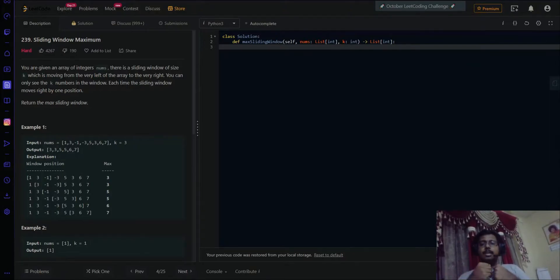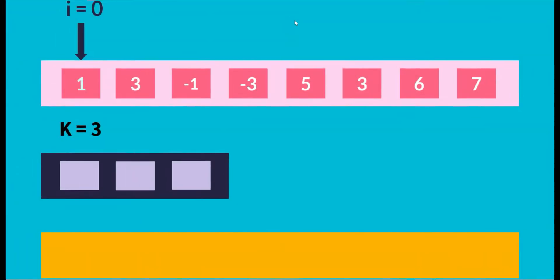Akash Menon has done a great job on the dry run for this problem — let's have a look. So this is the nums array we're given: [1, 3, -1, -3, 5, 3, 6, 7], and the size of our sliding window is k = 3. Our DQ will hold a maximum of three elements, and this is where our output elements will be inserted. Our i pointer starts from zero and goes to the very end of the array.